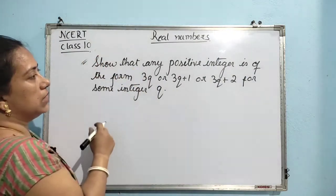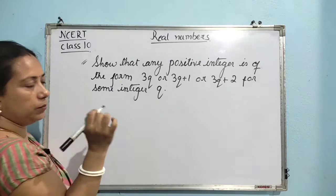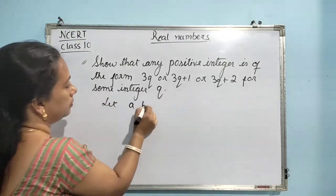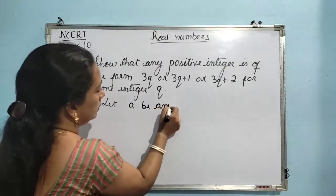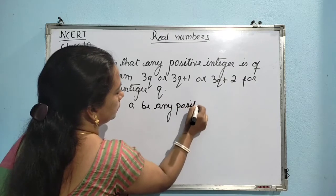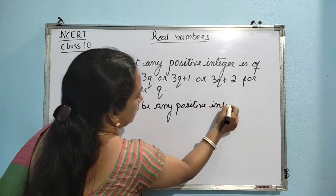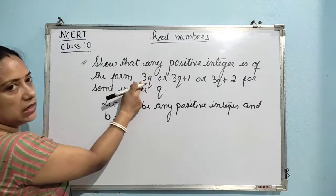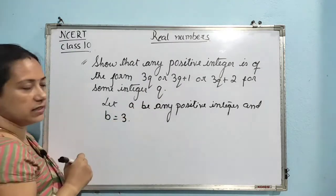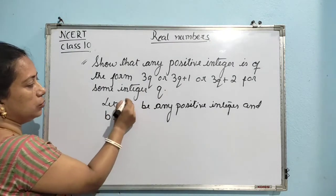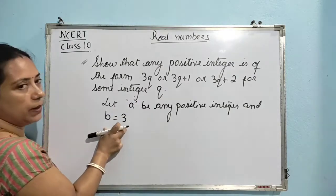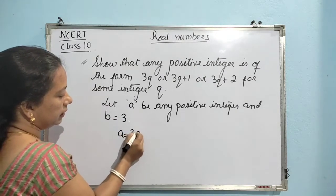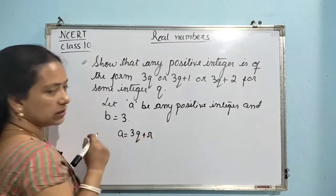So, we need to take a positive integer. Let A be any positive integer, and B is equal to 3, since we need it in the form of 3Q. Now we have taken A to be the positive integer and B is equal to 3. Then, if we apply Euclid's division lemma,